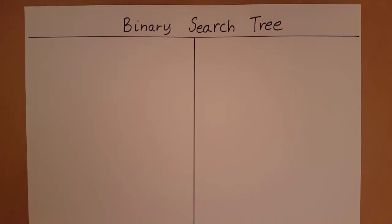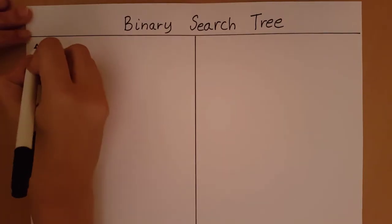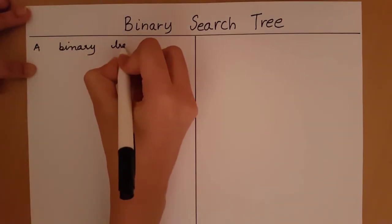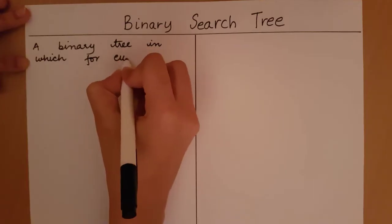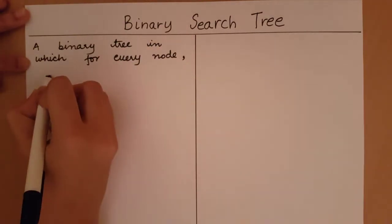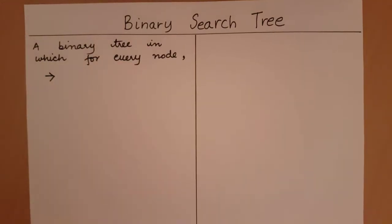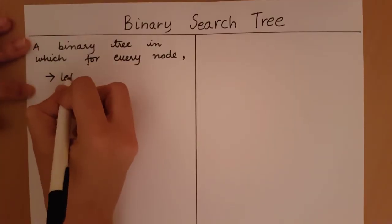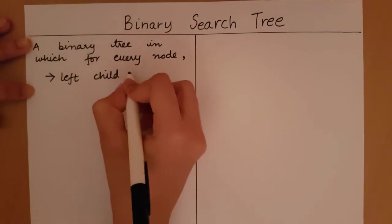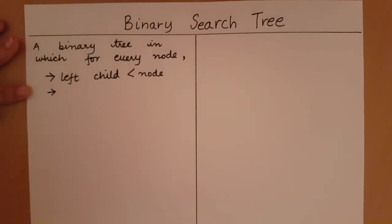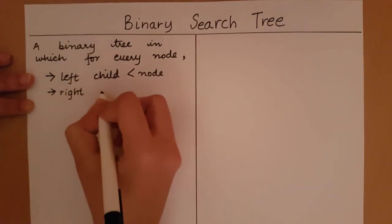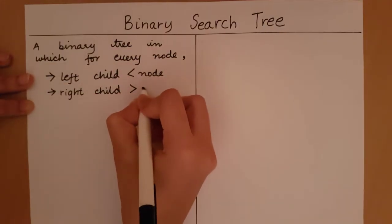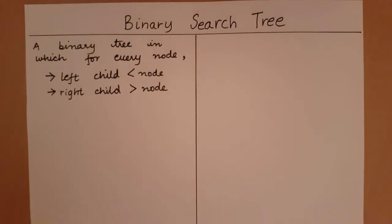A binary search tree is a binary tree in which for every node, the left child is going to be less than the node and the right child is going to be greater than that node. To properly understand this, let's take an example of a binary search tree.